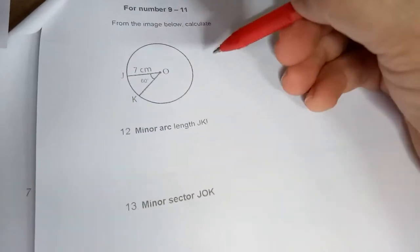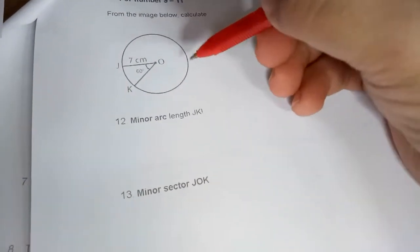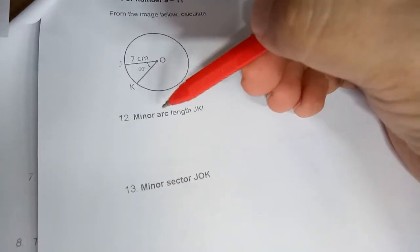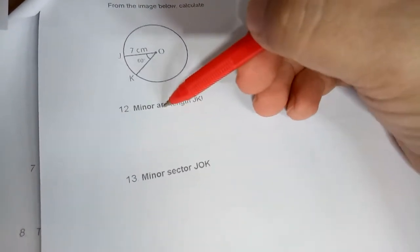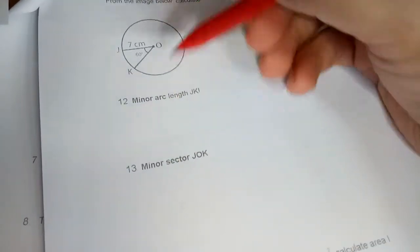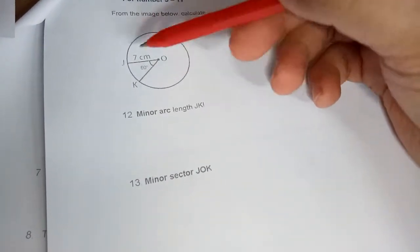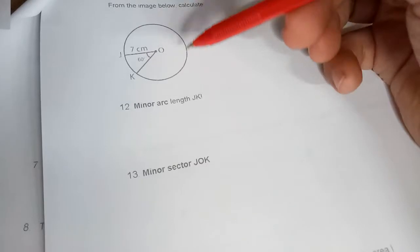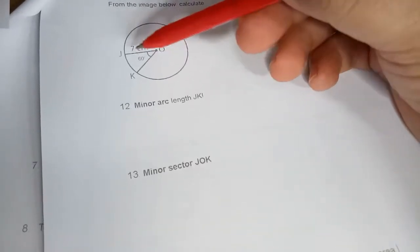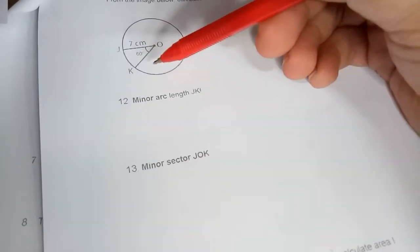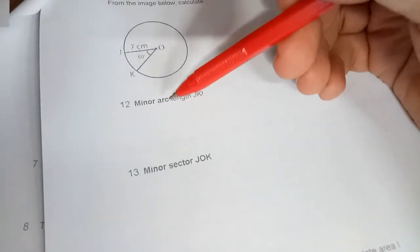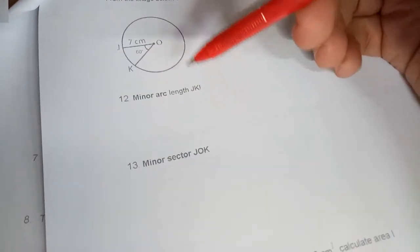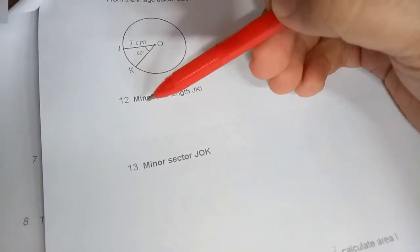Hello guys, right now I'm going to explain how to calculate minor arc, major arc, and the area of a sector. We have a problem here with a circle with a radius of 7 centimeters. For number 12, you need to calculate the minor arc length JK.